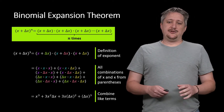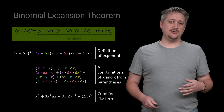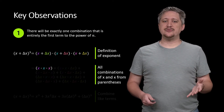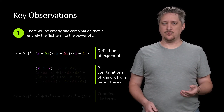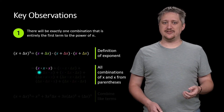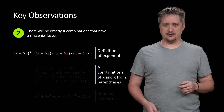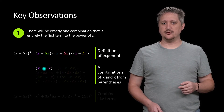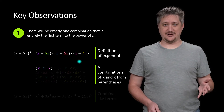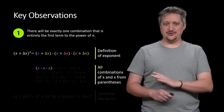Now, how is this useful? First key observation: there is only one way to get a term with only x's — choose x from every factor. If you don't choose x in even one factor, you'd have a delta x factor. So there is exactly one term that is purely x to the n.